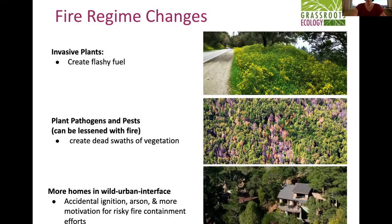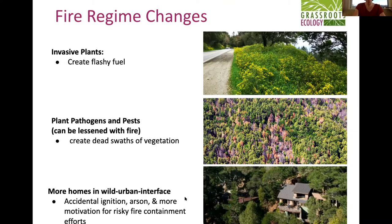Plant pathogens and pests can sometimes be lessened by fire, but the main impact with increasing fire severity is dead stands of vegetation creating ladder fuels and lots of standing dry timber. You can see dead tree swaths in this picture — that's from sudden oak death. Our increasing wild-urban interface, with more homes built in or near wild areas, creates more need for power infrastructure, more ignition sources, and changes how we control fire.